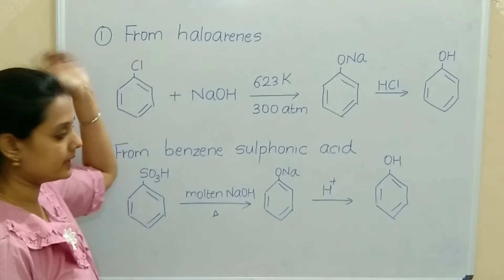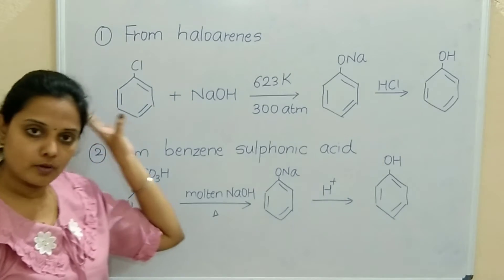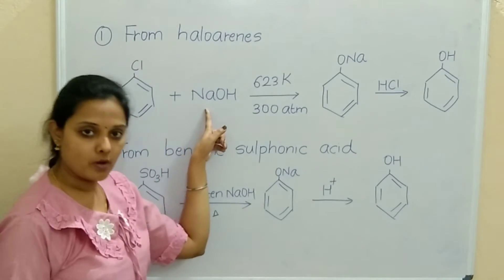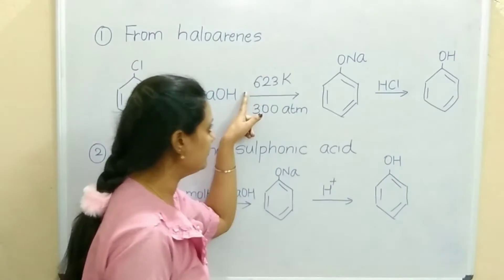Arene means the benzene ring with halogen attached. We'll take the example of chlorobenzene. When treated with sodium hydroxide at 623 Kelvin temperature, 300 atmospheric pressure.